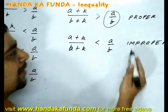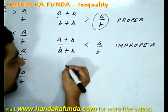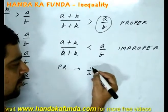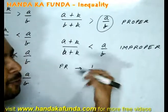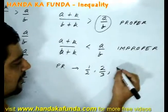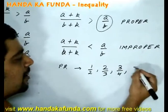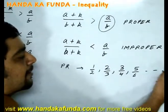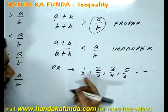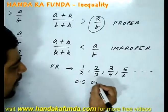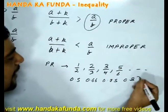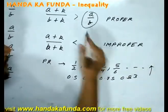Let us take an example of a proper fraction — something like 1 by 2, where the numerator is less than the denominator. If I add 1 to the numerator and 1 to the denominator, it becomes 2 by 3. Repeat the process: 3 by 4, then 5 by 6, and so on. The values are 0.5, 0.66, 0.75, 0.83 — as you can see, the value is increasing.